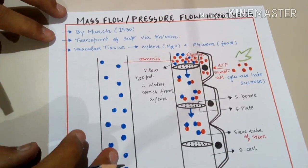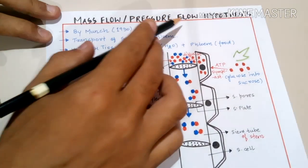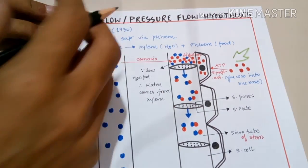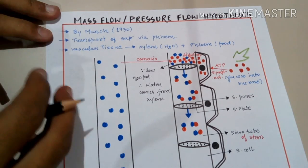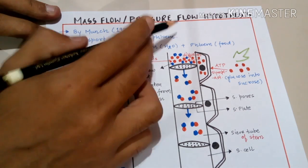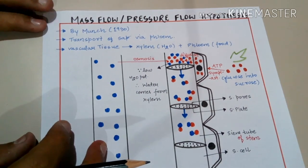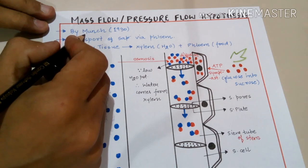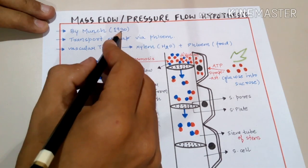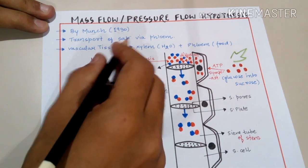Hello guys and welcome back to Vipen Sharma Biology Tutorials. Today we are learning a very requested topic: the mass flow or the pressure flow hypothesis. The mass, or sap, is flowing by this mechanism, and the pressure flow refers to the sap flowing due to a pressure gradient. This hypothesis was given by a scientist named Munch — also a chocolate brand, so easy to memorize — in 1930. It describes the transport of sap via phloem.